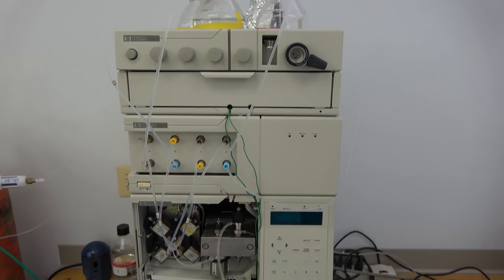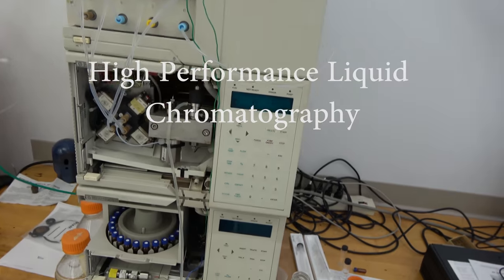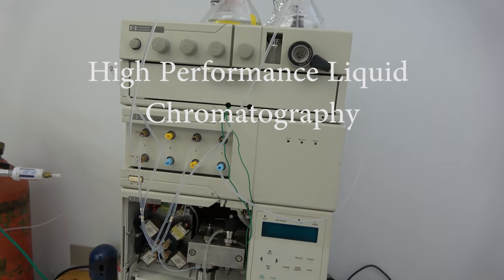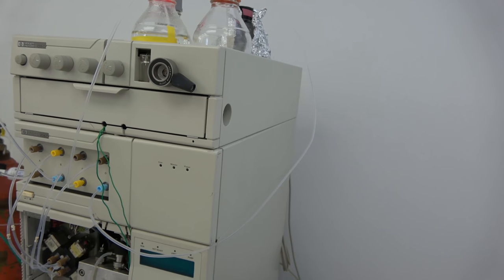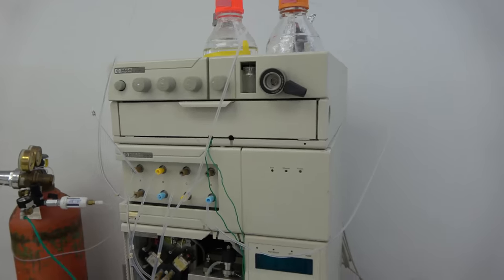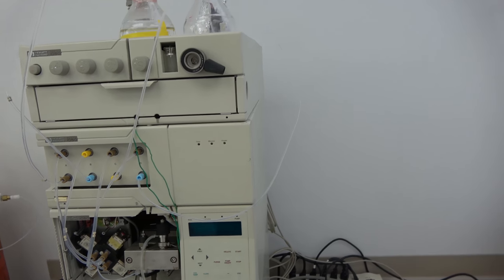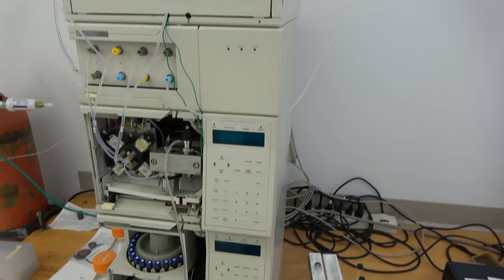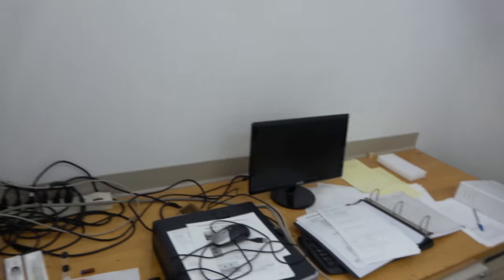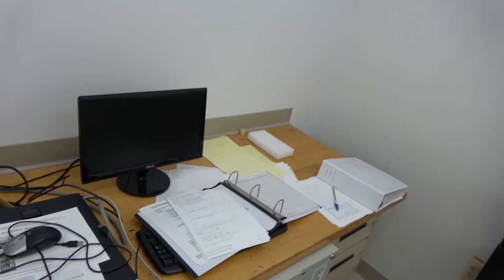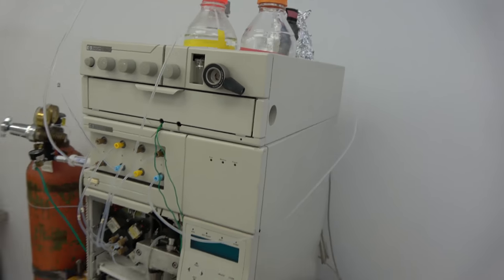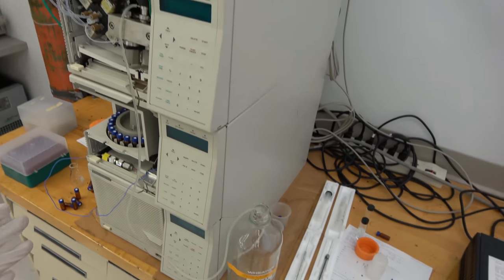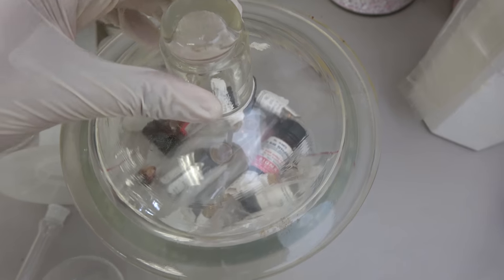This machine is called an HPLC. What this is is basically you analyze really tiny amounts of liquid. Just insane numbers. Insane analysis. You can get so much information. Downside is that this takes a while. You hook it up to a computer. Do all the computer stuff. I don't really have anything to do with this so whatever. But just so you know this is what a typical HPLC looks like.